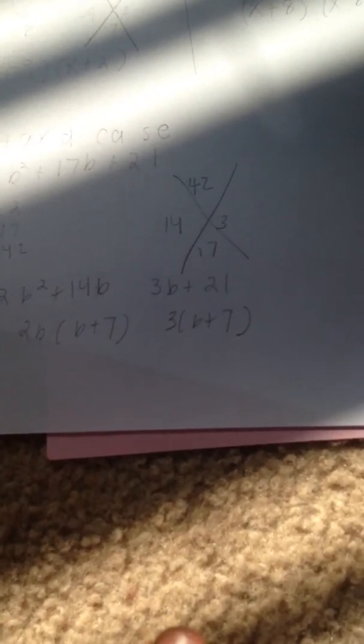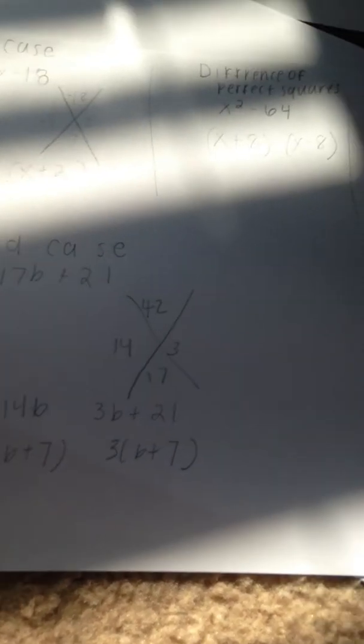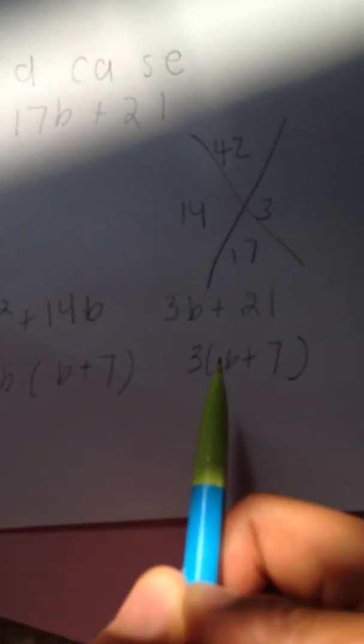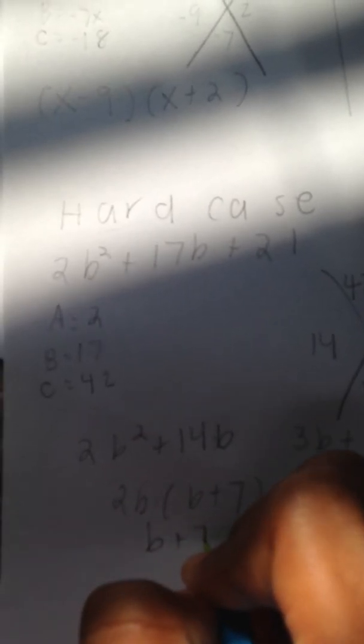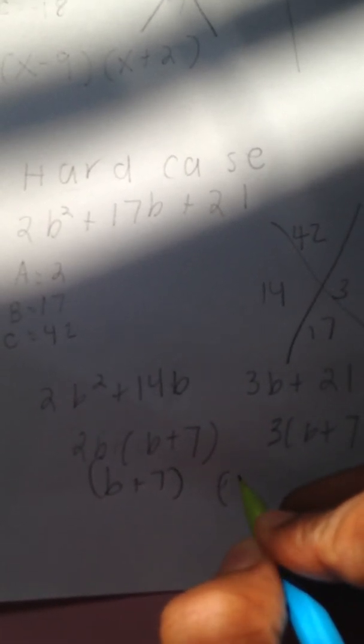I notice the greatest common factor is 3, and one thing to notice about a hard case is that when you factor each group, the expressions inside the parentheses have to be equal to each other — b plus 7 and b plus 7 always have to match; this is not a coincidence. With that, I take the shared factor b plus 7 and place it in parentheses, then combine the outside values 2b plus 3 into another expression. My final factored equation is 2b plus 3 times b plus 7.